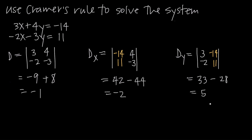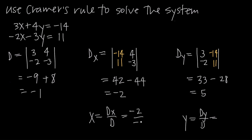Solving for x and y is straightforward. x equals D sub x divided by D — that's negative 2 divided by negative 1, which is positive 2. Similarly, y equals D sub y divided by D — that's 5 divided by negative 1, which is negative 5. So the solution set is x equals 2 and y equals negative 5, which we can write as the ordered pair (2, negative 5).